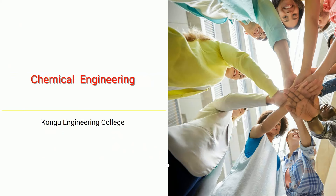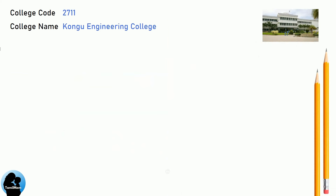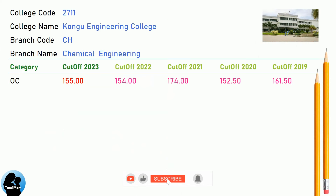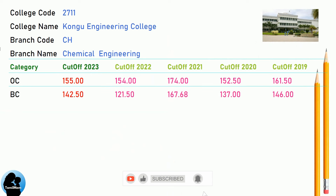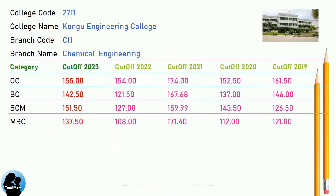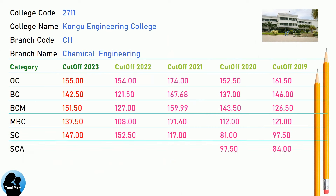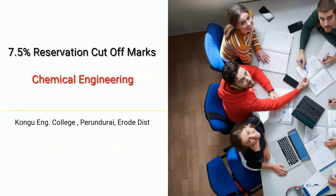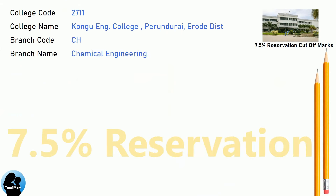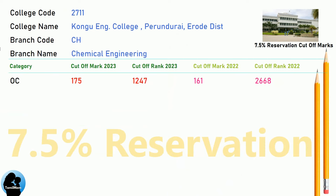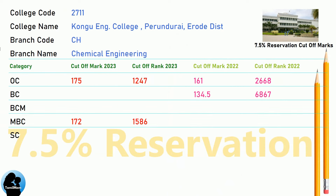DNA Cut-Off for Kongu Engineering College in Chemical Engineering. DNA 7.5 Reservation Cut-Off for Kongu Engineering College in Chemical Engineering.